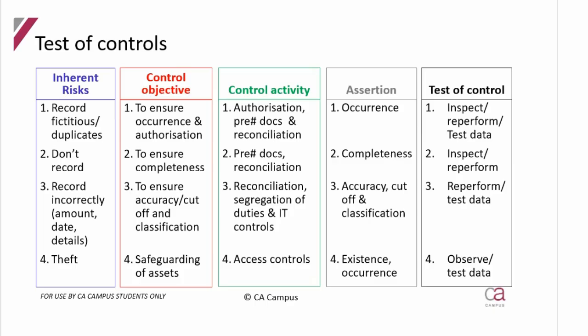As a summary: we have different types of risks related to recording a transaction or balance, the control objective to address that risk, an example of the control activity that achieves the objective and addresses the risk with the assertion, and now the test of control. If there's an authorized document, inspect it; if there's a reconciliation, re-perform it; if done by computer, put through test data to confirm it reconciles or that only authorized people can perform certain actions through access controls.